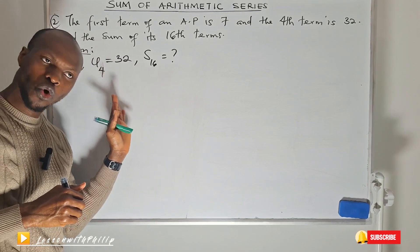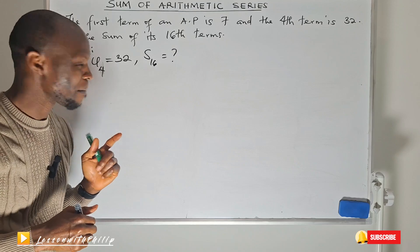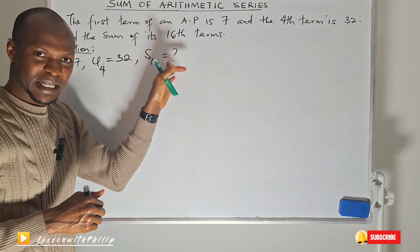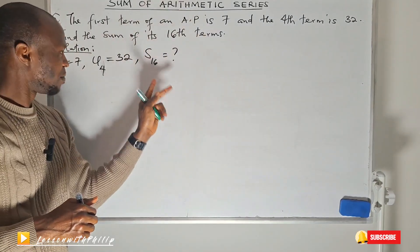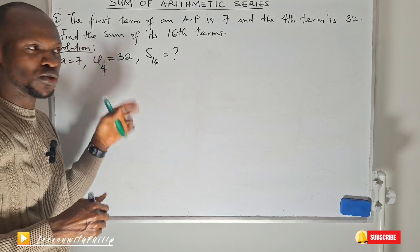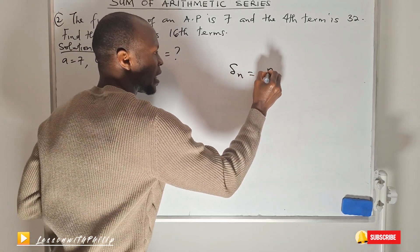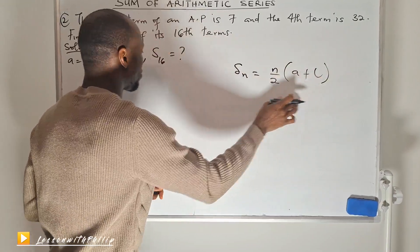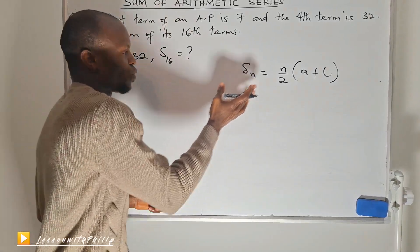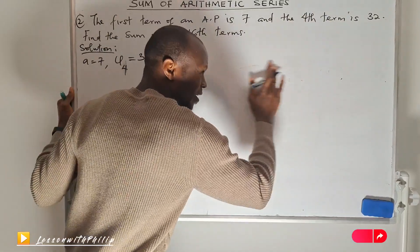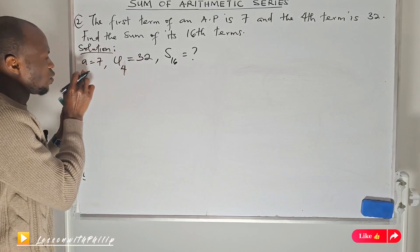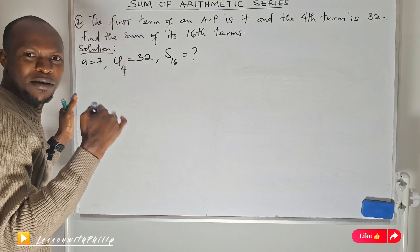Do we know the last term? No — 32 is the fourth term, not the last term. We know the first term and we have to find the 16th term, so n will be 16. Since we don't know the last term, we cannot use the second formula. That means we have to use the first formula.